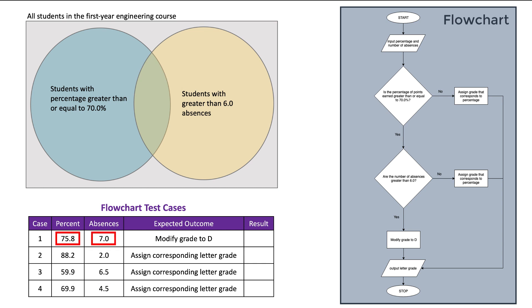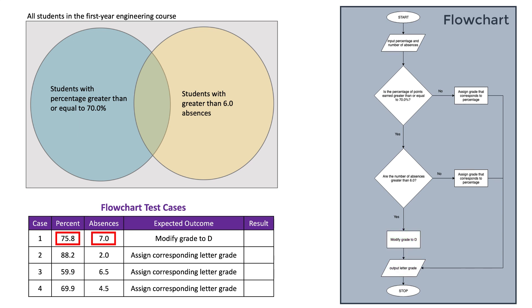Now look at case 1. Following the flowchart for case 1, I input the percent as 75.8 and the number of absences as 7.0. Looking at the first decision, is the percentage of points earned greater than or equal to 70%? The answer is yes, so I move down to the next decision. Are the number of absences greater than 6.0? Again, the answer is yes, so I follow the yes path. So we assign the student a letter grade of D and output that to the user. Our actual outcome and our expected outcome match. This is good.